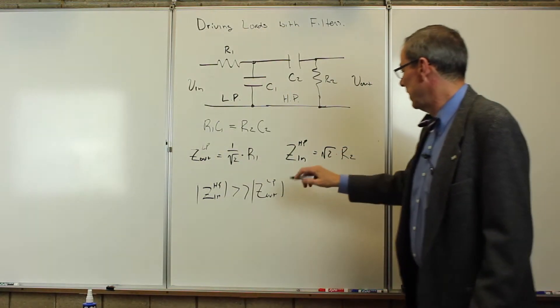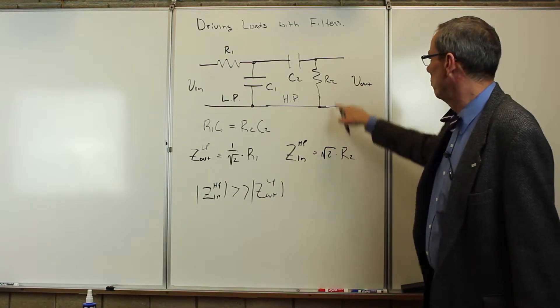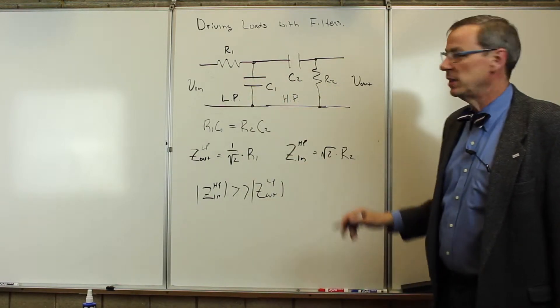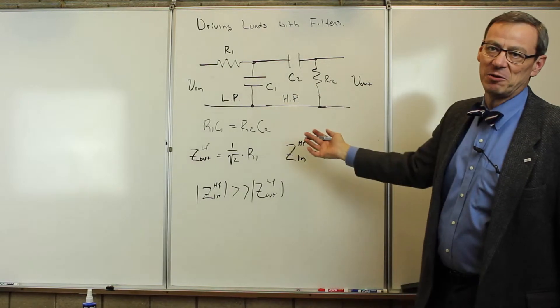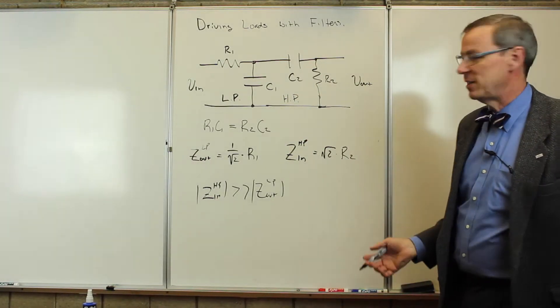So, roughly speaking, we've got to choose R2 to be 10, 20, 30, 40 times bigger than R1, which means the corresponding capacitor is going to be that much smaller in order not to have anything sag.